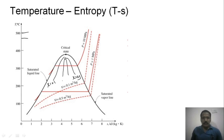The specific volume lines are shown as dotted lines. We can see that specific volume increases in one direction while pressure increases in the other direction.